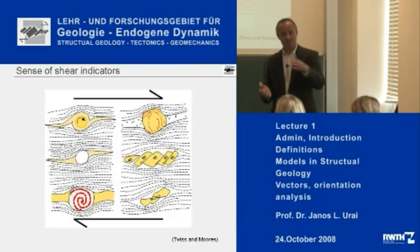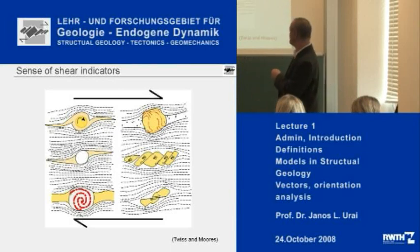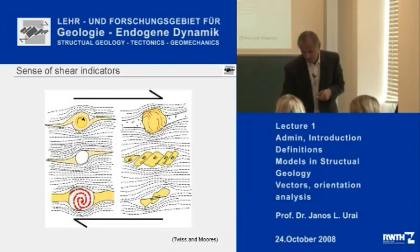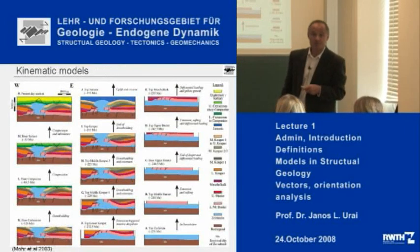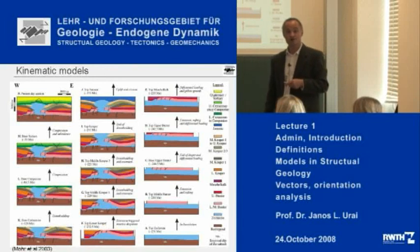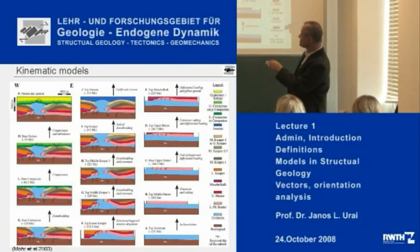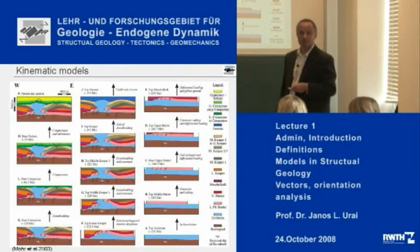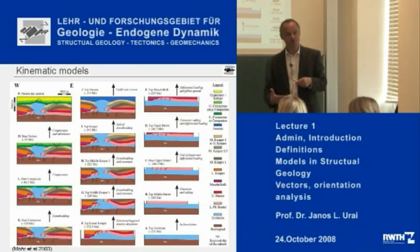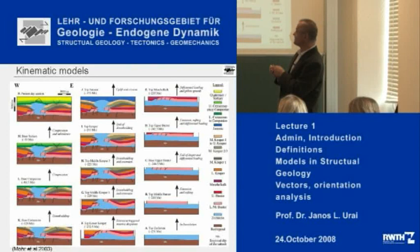Slickensides and Harnische are similar indicators of motion. Much larger and more complicated models are based on interpretation of structure in the subsurface. This is, for example, a geometric model of the subsurface of Germany — all the different colors show different layers: the Tertiary, the Cretaceous, the Permian, and blue is salt.